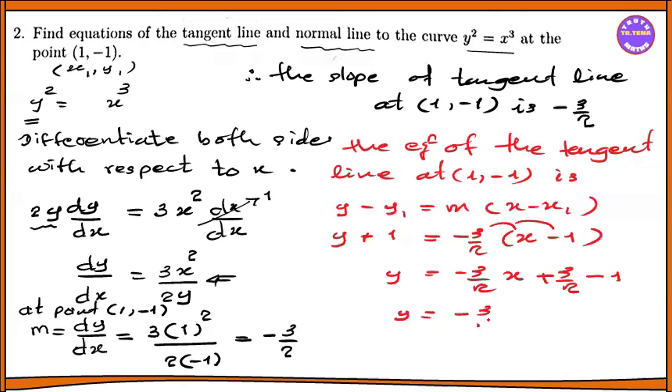y equals minus 3/2 x plus 1/2. This is y equals mx plus c form. That is the tangent equation. Multiplying by 2: 2y equals minus 3x plus 1. Rearranging: 3x plus 2y equals 1. That is the tangent line equation.